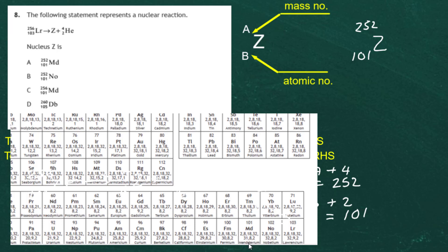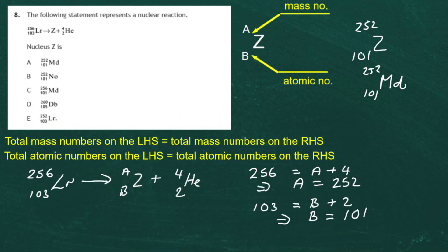Atomic number 101 is Md — mendeleevium. So the nucleus changes to give us Md-252 with atomic number 101 — mendeleevium. Looking down the answer list, the answer is A: Md, mass number 252, atomic number 101. The answer to question 8 is A.